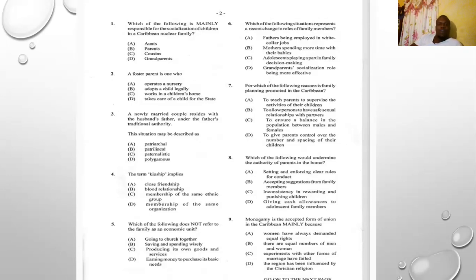Number four: the term kinship implies A) close friendship, B) blood relationship, C) members of the same ethnic group, or D) members of the same organization. The answer is B) blood relationship.